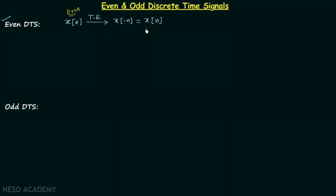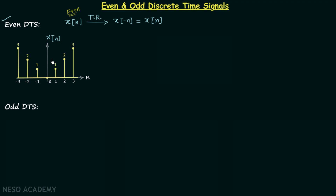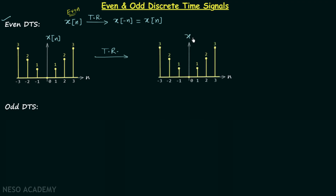To understand this, let's take one example where the discrete time signal Xn has a given plot. To check if signal Xn is an even signal or not, we will perform the time reversal operation and obtain signal X(-N). On comparison you will find the two plots are the same. This implies the original signal Xn is equal to the signal obtained after time reversal, and hence signal Xn is an even discrete time signal.